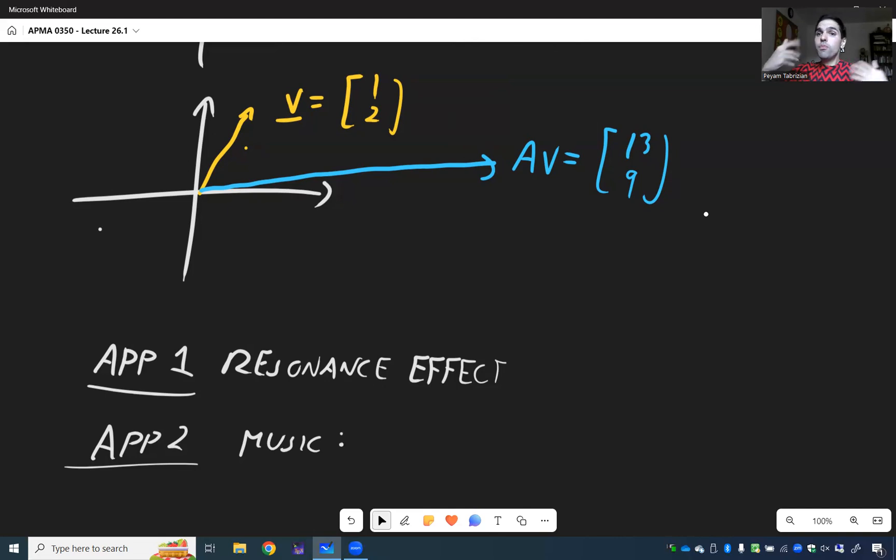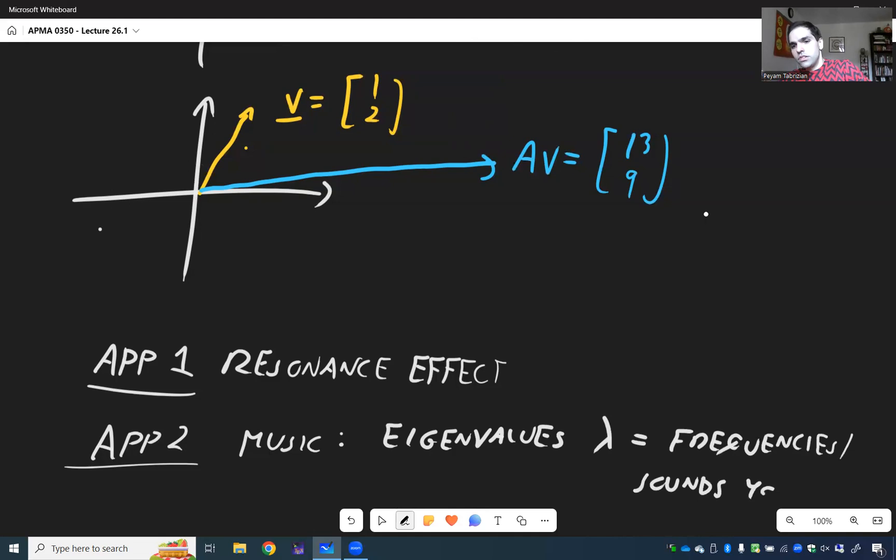Because if you play a musical instrument, think a drum or a guitar, then the eigenvalues are actually the frequencies of the musical instrument. So the sounds you hear. Eigenvalues lambda is just the sounds you hear, frequencies, sounds you hear.